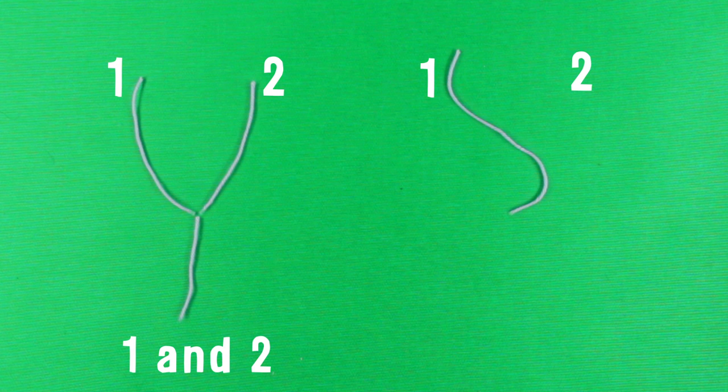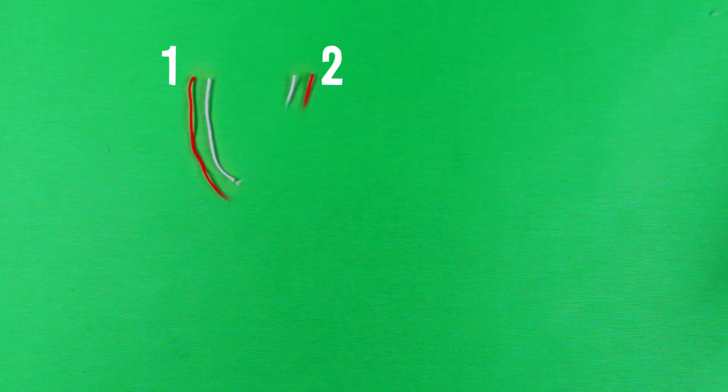But there are also non-commutative mathematical operations, where the order does matter. Take, for instance, these two ribbons fusing together. If you do it this way, the result is very different when you change the starting order. This is a non-commutative operation.